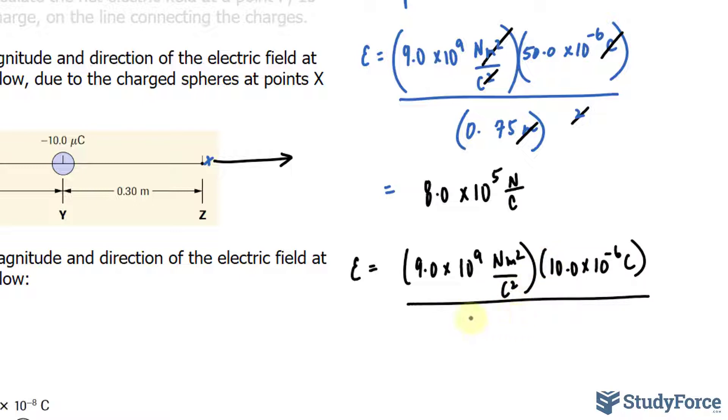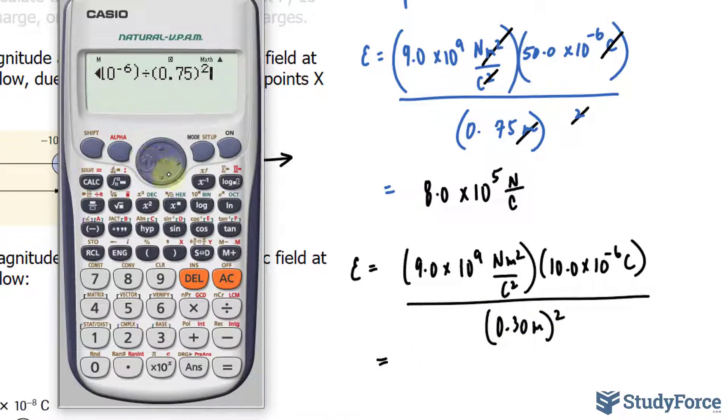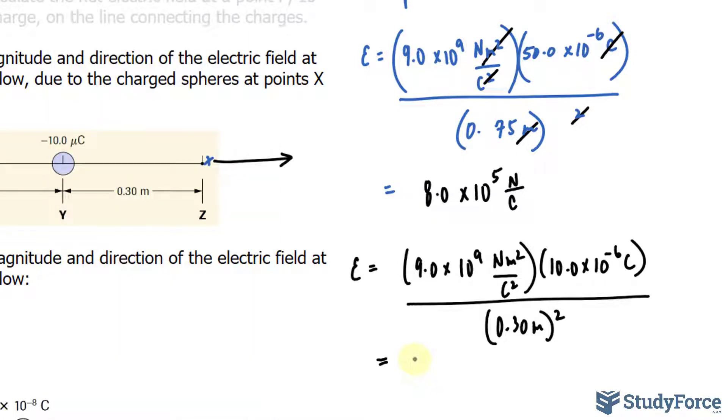And the distance now is 0.30 meters to the power of 2. Using our calculator again, all I have to do is adjust the distance and adjust the charge. And we get, this time, 1 million. So 1.0 times 10 to the power of 6 newtons per coulomb. Let me highlight these two numbers.